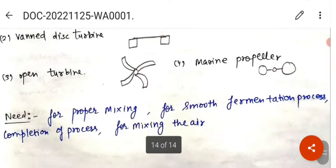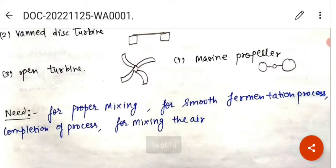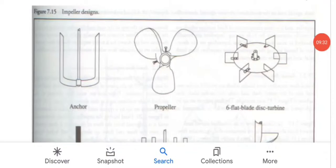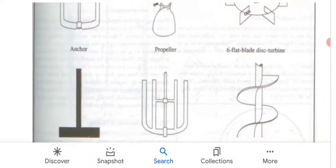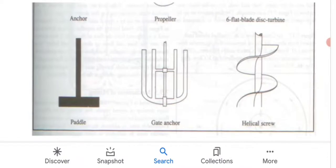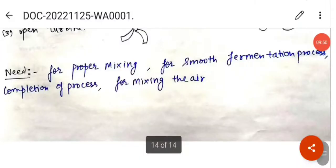The types of the impeller: the first one is the disc turbine, then we have the vaned disc turbine type, then we have the open turbine and the marine propeller. Impeller designs can be the anchor, the propeller, the six flat blade disc turbine, the paddle shaped impeller, gate anchor shaped, helical screw shaped impeller.